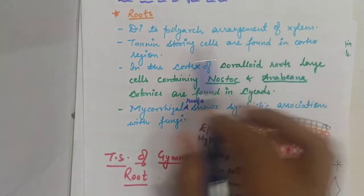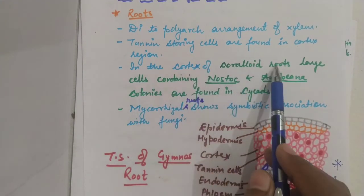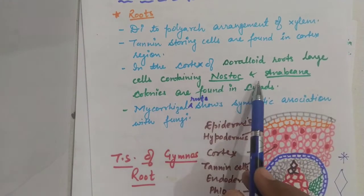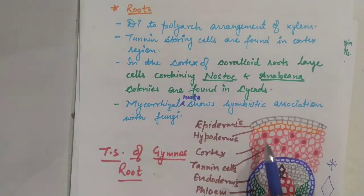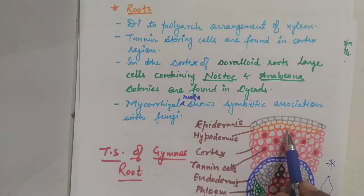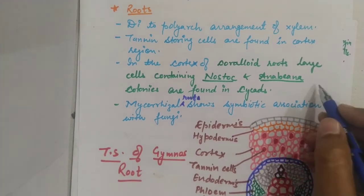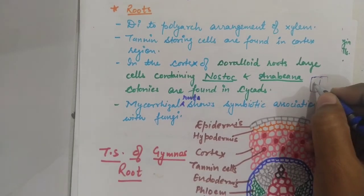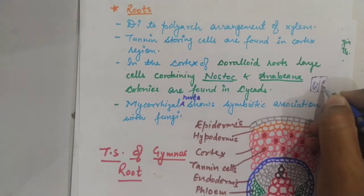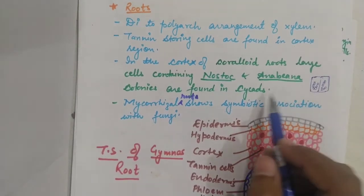Tannin-storing cells are found in the cortex region. In the cortex of coralloid roots, large cells containing Nostoc and Anabaena colonies are found in cycads. The outer and inner cortex are divided, and in the middle cortex there are large, elongated, rectangular-shaped cells containing Nostoc and Anabaena colonies, which are blue-green algae having a symbiotic association with these roots.